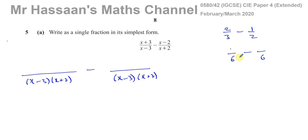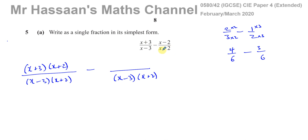Now, how do I find what goes in the numerator? For the numeric example, I multiply three by two to get six, so I multiply the top by the same thing — two times two gives four. I multiply two by three to get six, so one times three gives three. The same thing applies here: what do I multiply x minus three by to get x minus three times x plus two? I multiply by x plus two. So I multiply the numerator by x plus two as well, giving x plus three times x plus two. And for the second fraction, I multiply by x minus three, so the numerator becomes x minus two times x minus three.